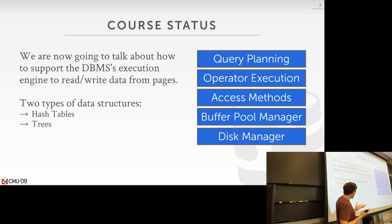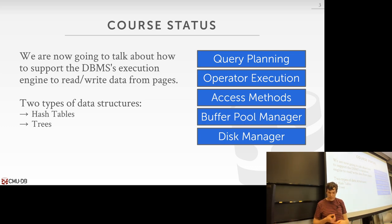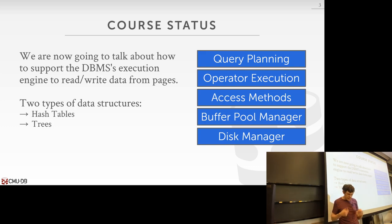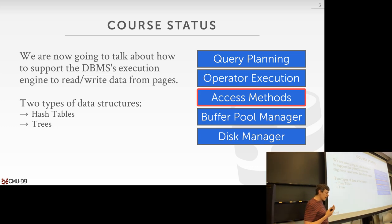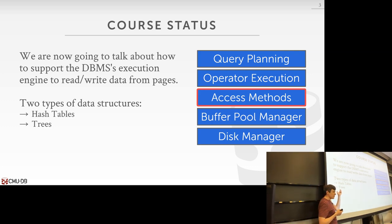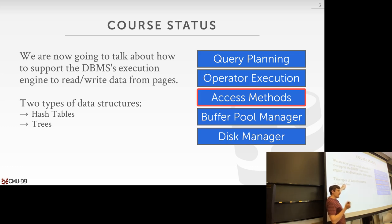We've spent the first couple weeks starting at the bottom of the stack of a database system architecture and working our way up. We discussed how to store data on disk — pages on disk — then how to bring those pages into memory in our buffer pool or buffer cache, with policies deciding when to evict something and how to pin things during writes. Now we're going above the buffer pool manager and starting to talk about access methods — essentially how we read or write data stored in pages on disk.